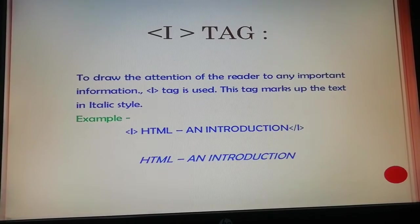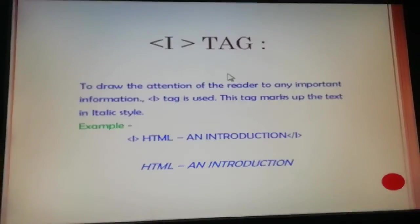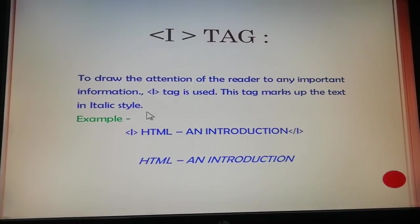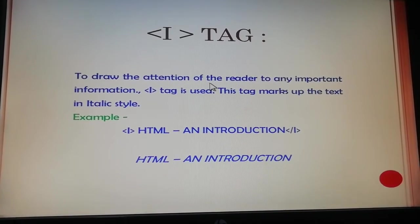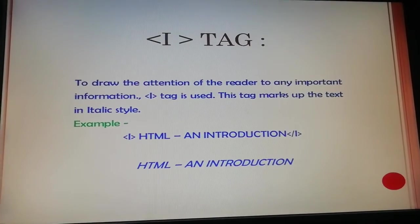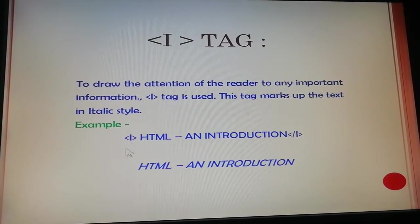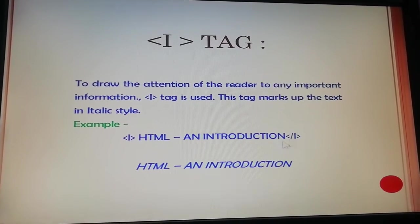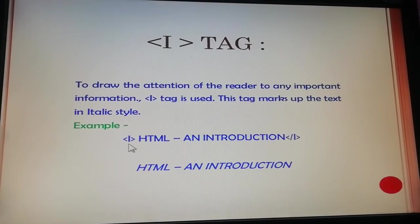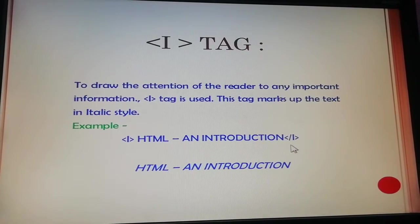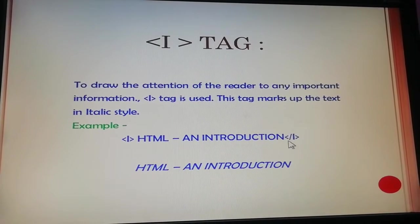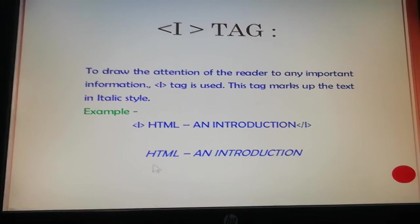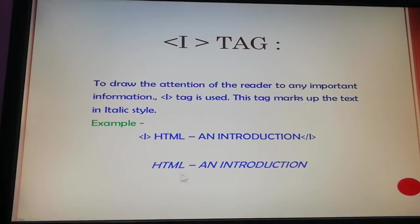Now the next tag is the italic tag. As its name indicates, this marks up the text in italic style. To draw the attention of the reader to any important information, we can use I tag. This I tag or italic tag is used in pair, so it is a container tag. If you write it like this: I, HTML - an introduction, and then the closing tag of the italic tag, you will get your text written in italic style like it is displayed here.